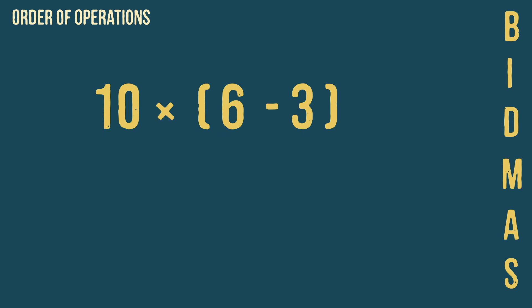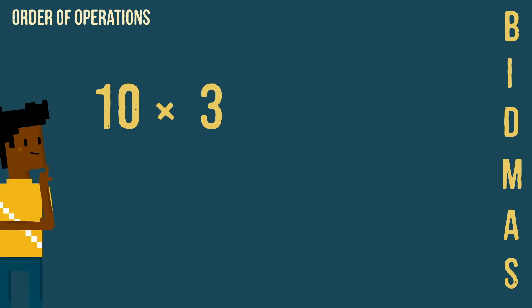In this question, anything inside the brackets would be carried out first, followed by the multiplication as there are no indices or divisions.